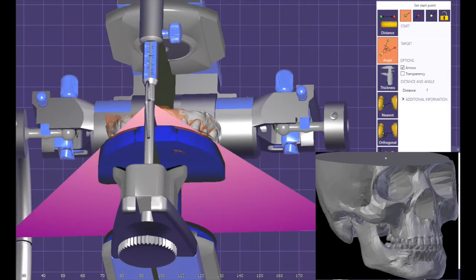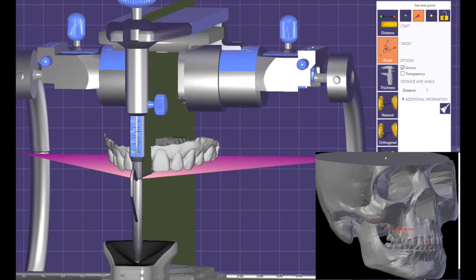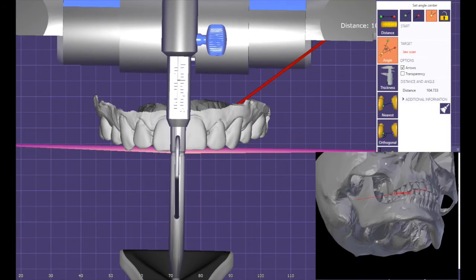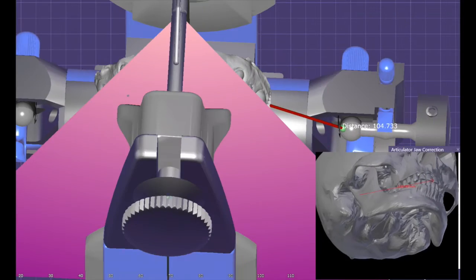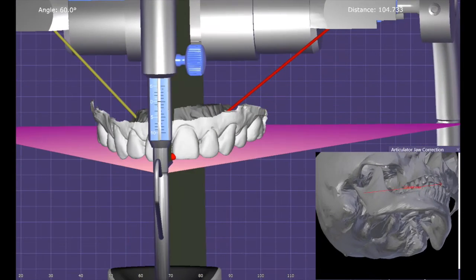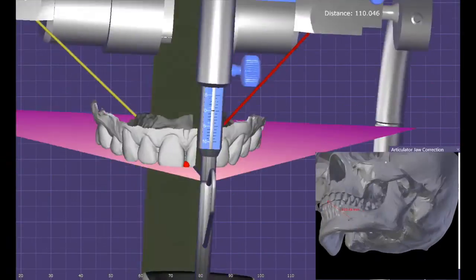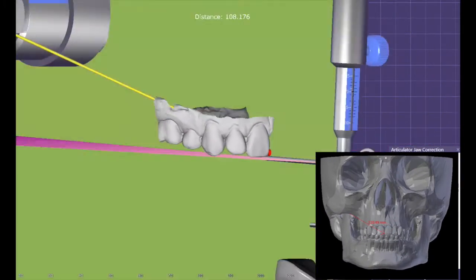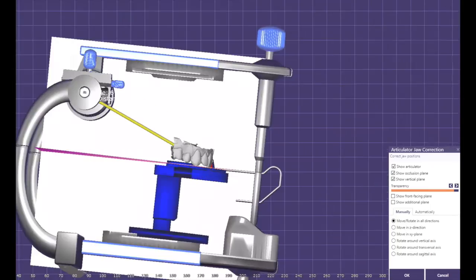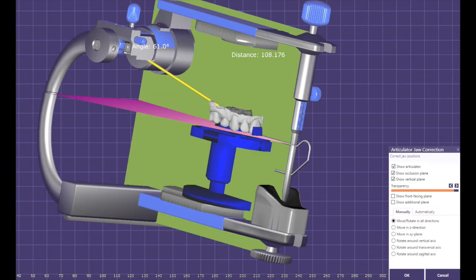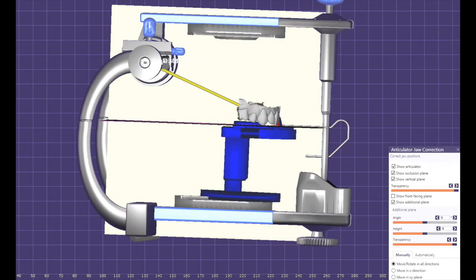Also based on CBCT data you can also measure the bounce wheel triangle distance and orient the models to the articulator using that distance. Or you can also use the average 110mm. You can also correlate the additional plane for static purposes if needed.